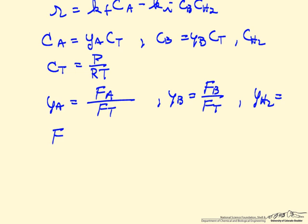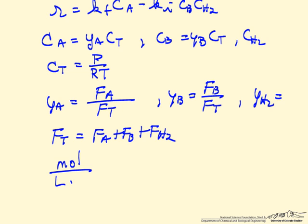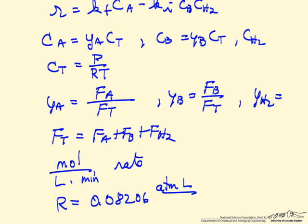The total flow rate is the flow rate of A plus the flow rate of B plus the flow rate of hydrogen. The units for the rate are moles per liter per minute. We work in those units using atmospheres, and the gas constant is 0.08206 in units of atmospheres·liters per mole·Kelvin.